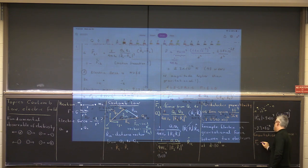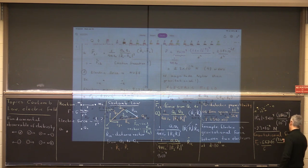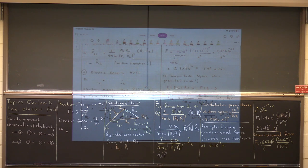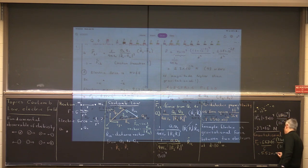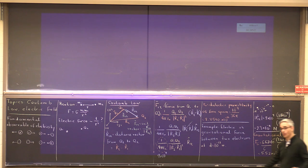If you redo this calculation for the gravitational force — which is an attractive force between the electrons — using Newton's constant 6.67 times 10⁻¹¹, the mass of the electron 9.1 times 10⁻³¹, and distance 10⁻¹² squared, this comes out to 5.52 times 10⁻⁴⁷. So you have a humongous difference between the electric force — which here is repulsive — and the gravitational force at 10⁻⁴⁷.